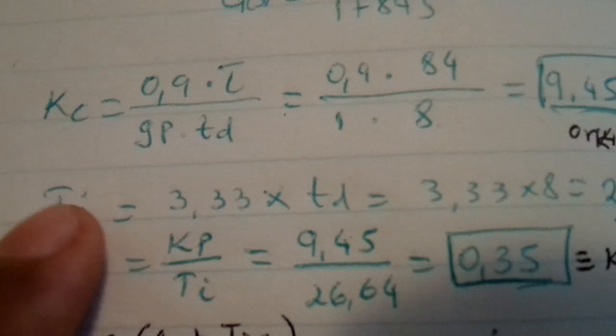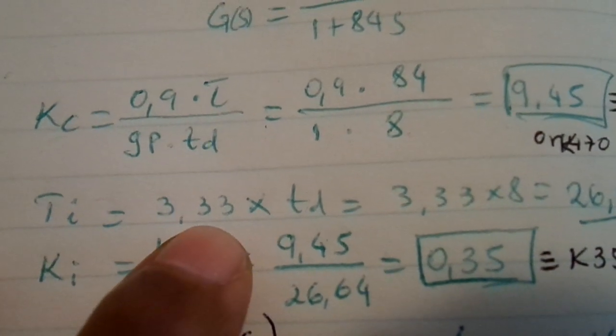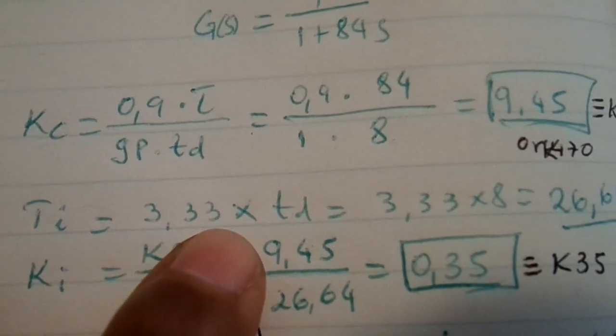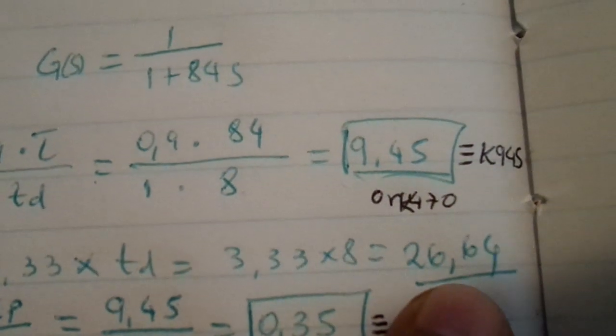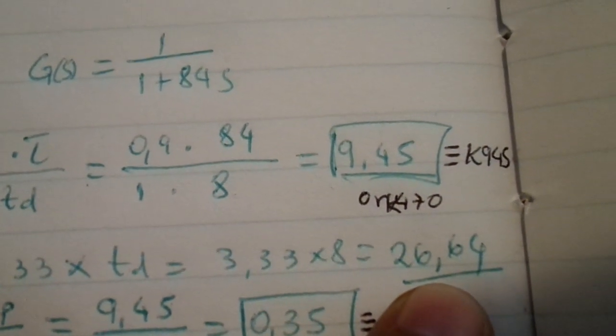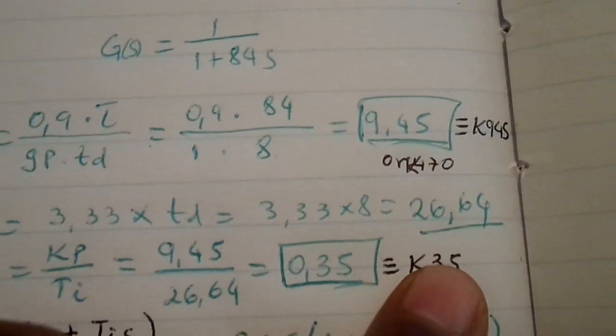The integral time, this is the formula: 3.33 times the time delay, and I got 26.64.